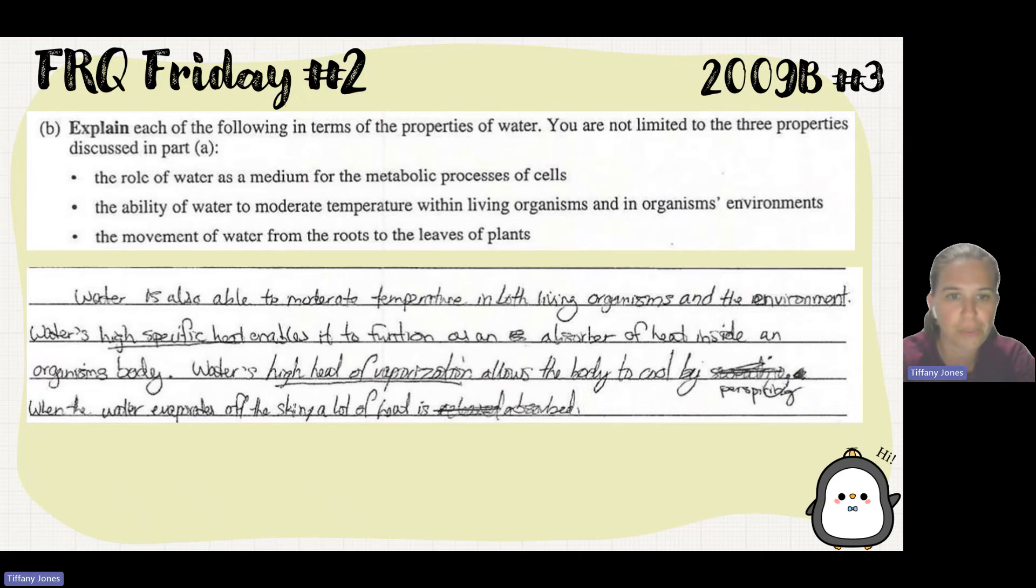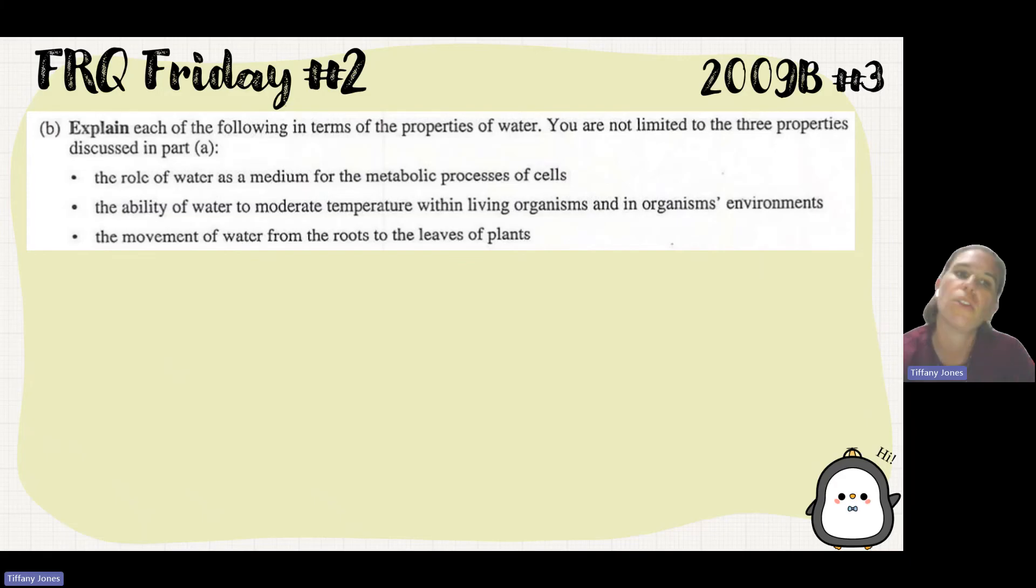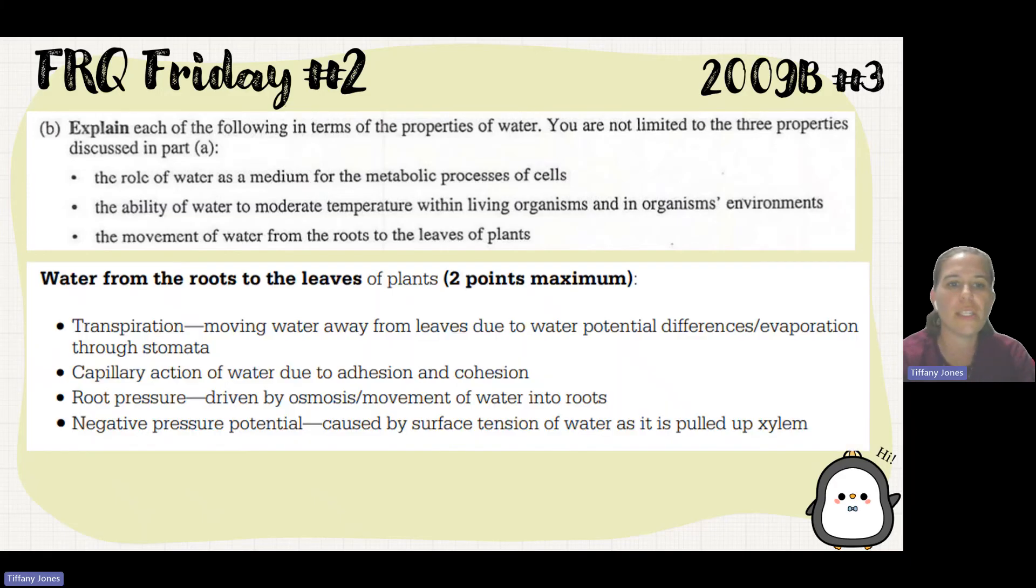Also, ice forming acts as insulator for lakes. When water freezes it floats, creating a barrier stopping cold air from getting to the rest of the lake, so life forms that live in the water can survive the winter. The student mentioned water's high specific heat enables it to function as an absorber of heat, and high heat of vaporization allows the body to cool.